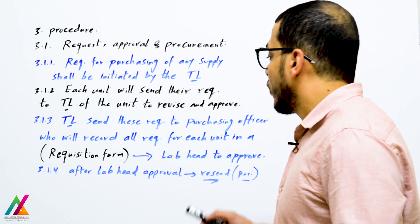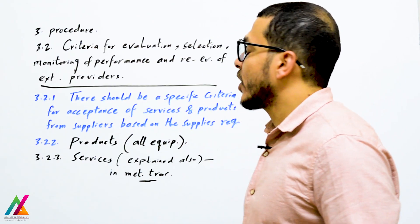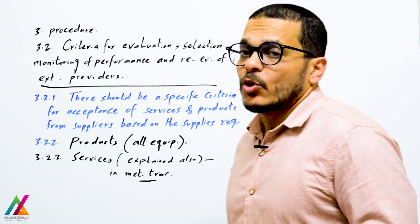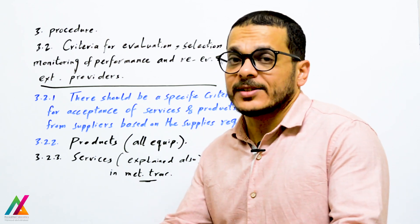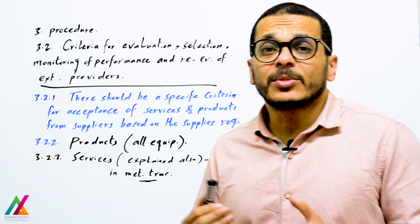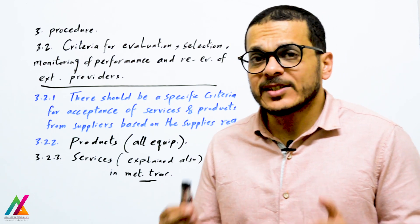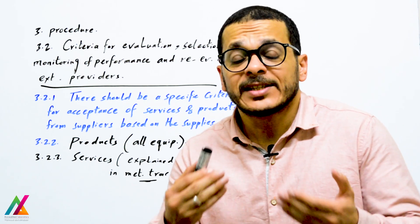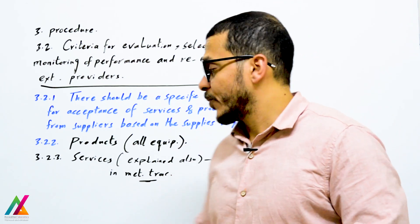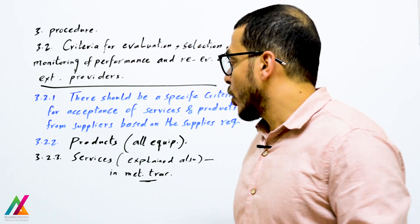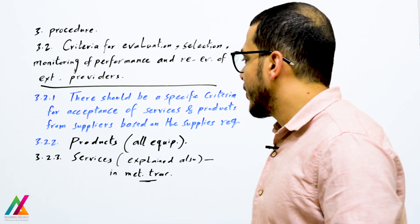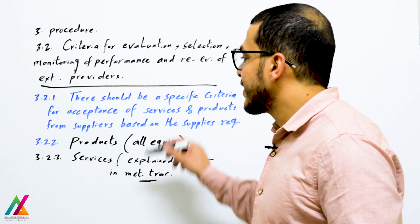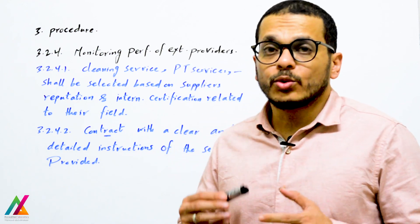The second step covers criteria for evaluation, selection, monitoring of performance, and re-evaluation. There shall be specific criteria for acceptance of services or products from suppliers, determined by the technical lead for each unit based on whether the product or service can meet the requirements of this document, the lab, and the lab activities. For products — which include all equipment — and for services, details on requirements were covered in the equipment and metrological traceability clauses.